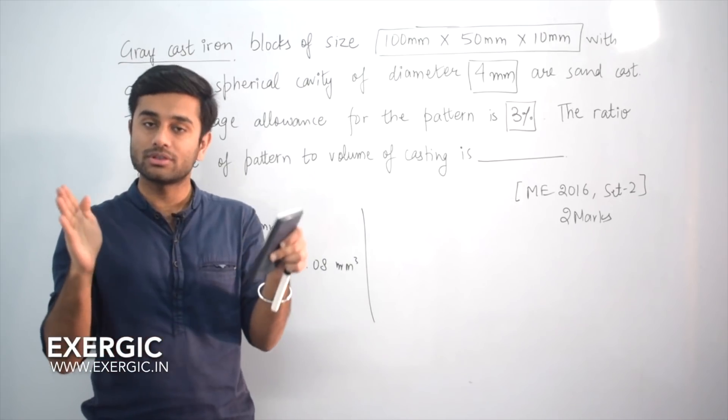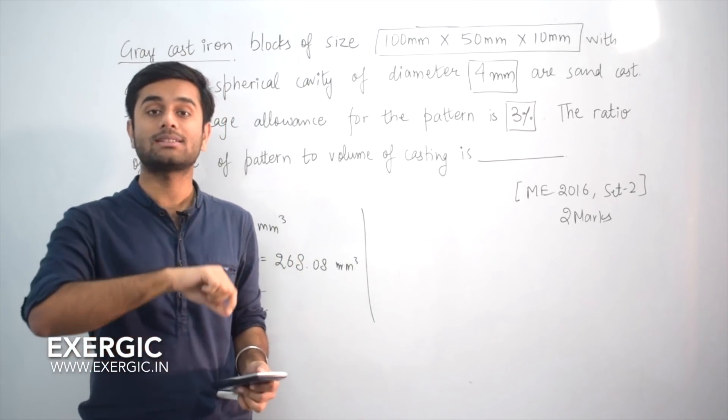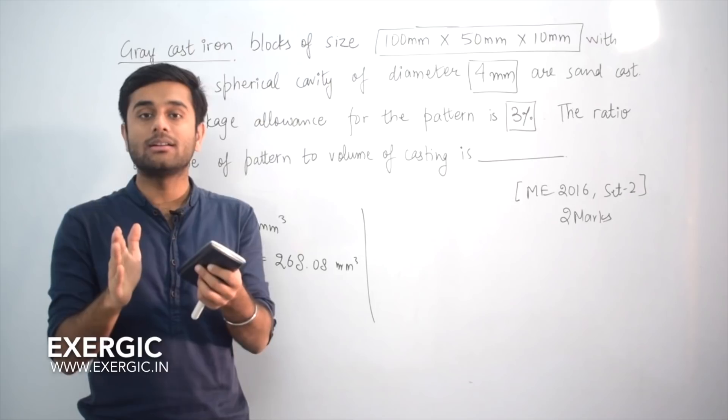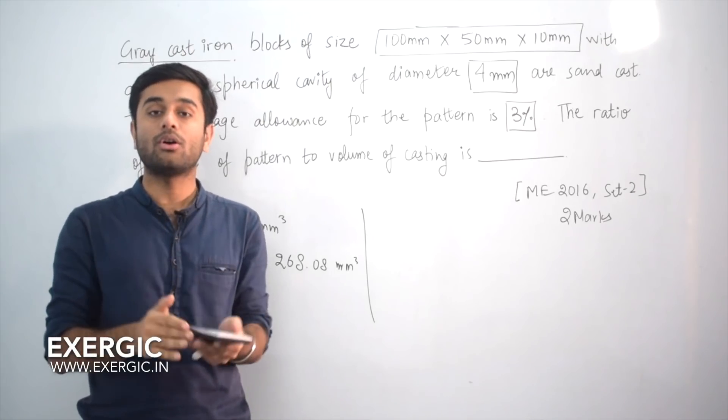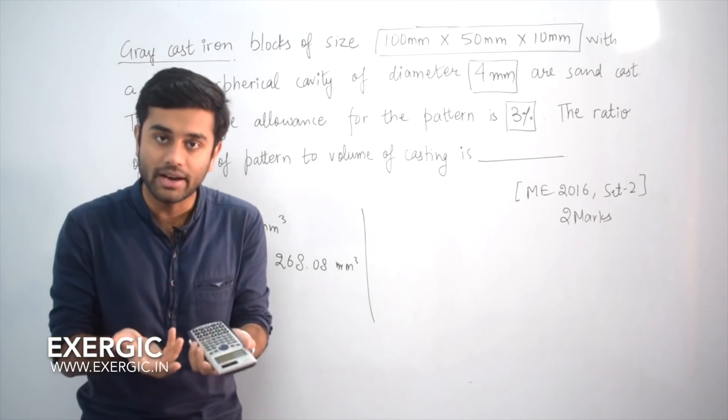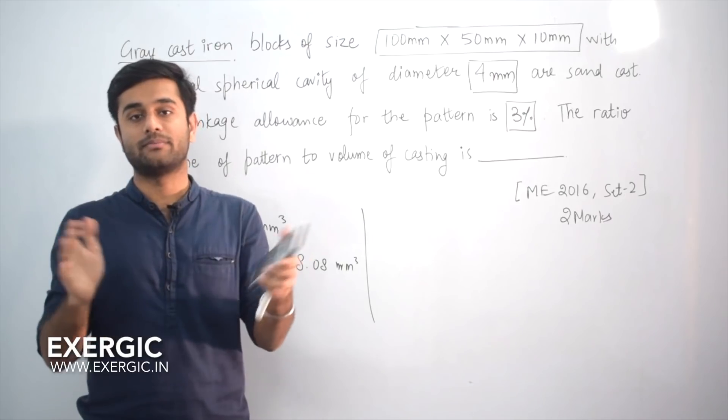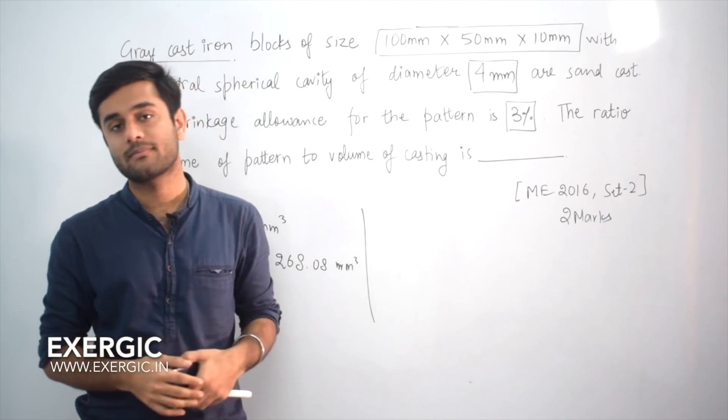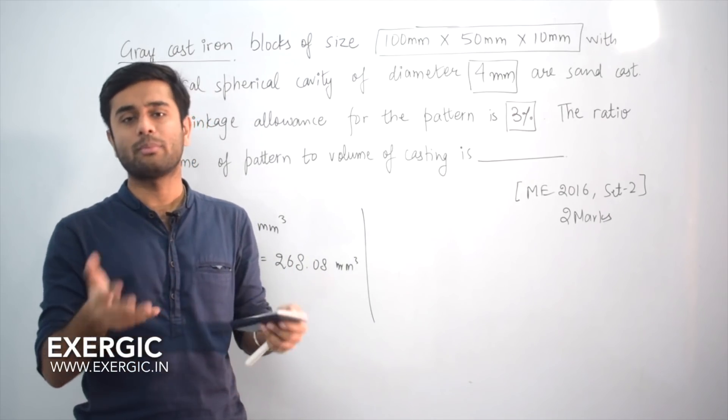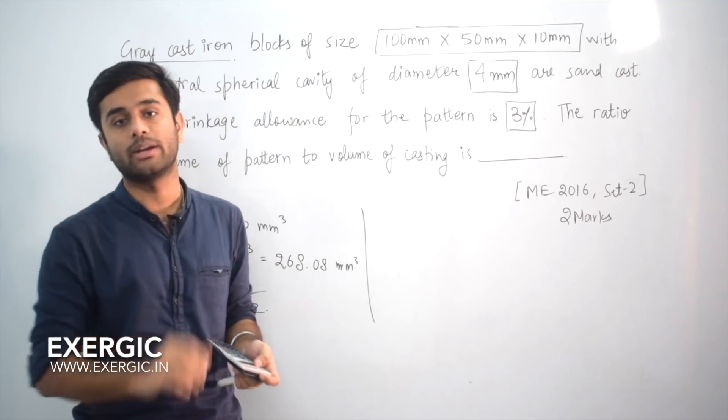The pattern of grey cast iron needed to be made smaller. Generally we made the pattern larger because it is going to shrink. But for grey cast iron, the pattern is to be made smaller because after being solidified, it expands. It expands. This was the general notion. Many - not many - every institute gave their answer according to that only.